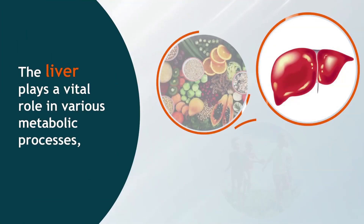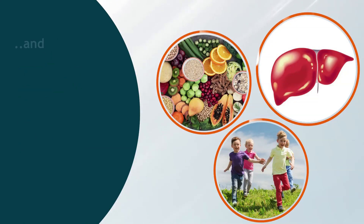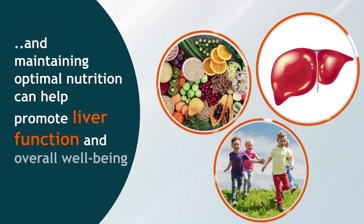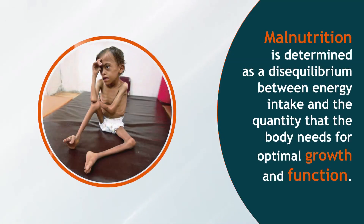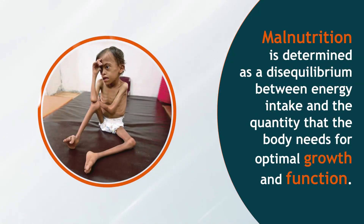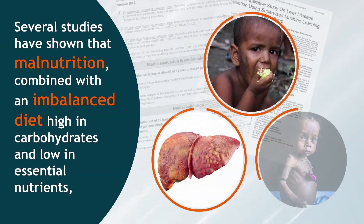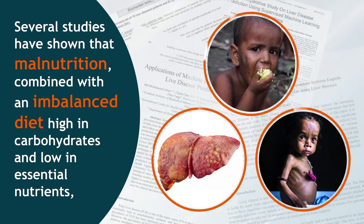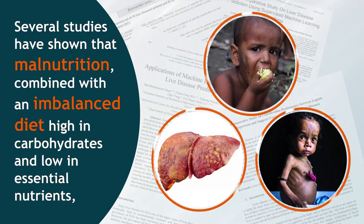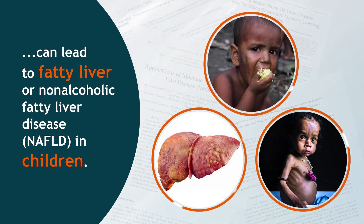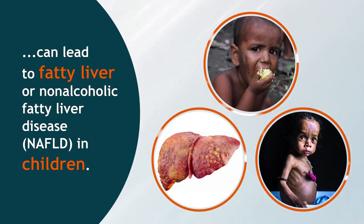The liver plays a vital role in various metabolic processes, and maintaining optimal nutrition can help promote liver function and overall well-being in children. Malnutrition is determined as a disequilibrium between energy intake and the quantity that the body needs for optimal growth and function. Several studies have shown that malnutrition, combined with an imbalanced diet high in carbohydrates and low in essential nutrients, can lead to fatty liver or non-alcoholic fatty liver disease (NAFLD) in children.